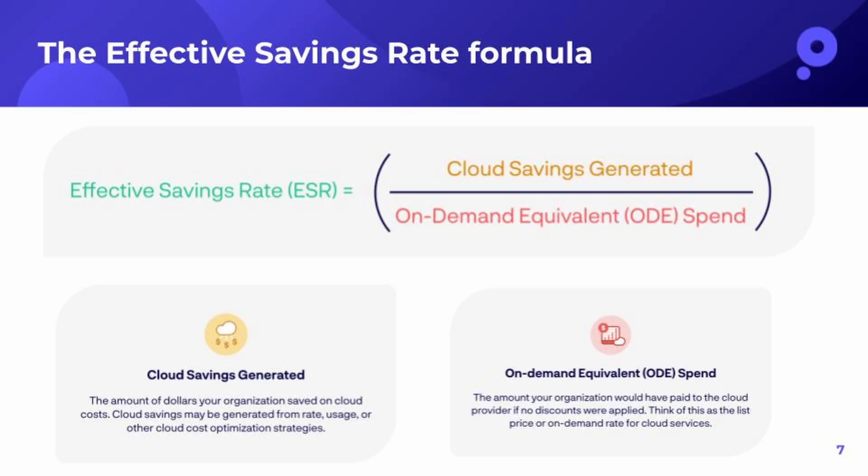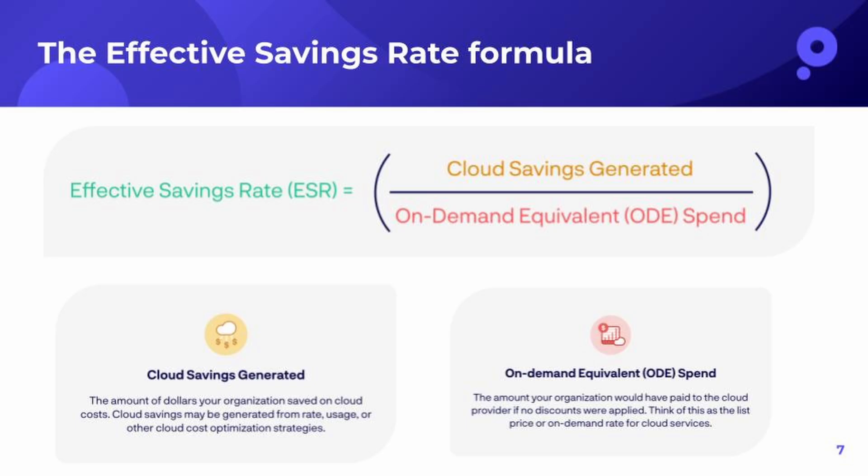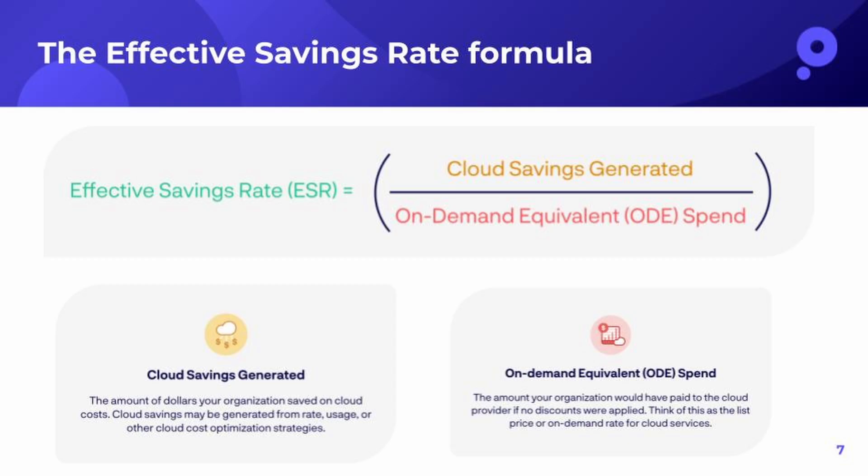Formulaically, ESR is calculated as the aggregate discount off of the on-demand rate across your cloud usage. You can look at it in terms of your compute usage, or look at ESR for a particular AWS service such as RDS, or calculate it as part of your total compute usage. You can also make it customized to include or exclude your EDP or PPA.